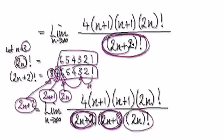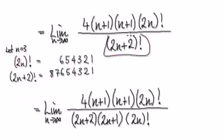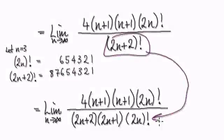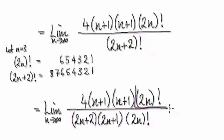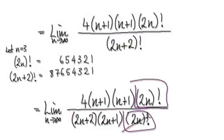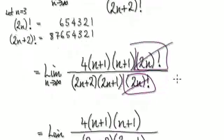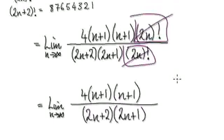Visualize when you're here — break this up as one block times another block times another block. You can now see that the (2n) factorial here will cancel out with this, and that will then take you to here.